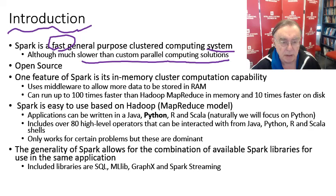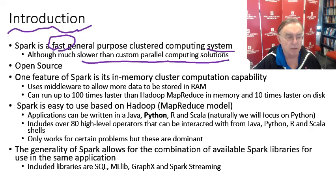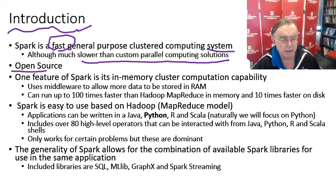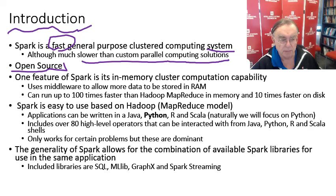Spark is slower than traditional custom parallel computing solutions, but that's only if you run traditional parallel computing jobs. Most of the time Spark is not running those, and in the cases where it's really used a lot, Spark is possibly the best available solution. It is open source, and as noted, big data software today is largely open source. Spark, like most of the others, is Apache — the largest collection of open source projects, with a wonderful community model for supporting open source software.